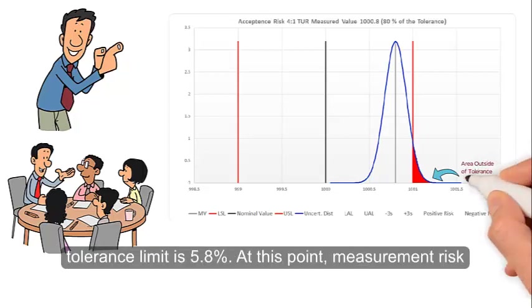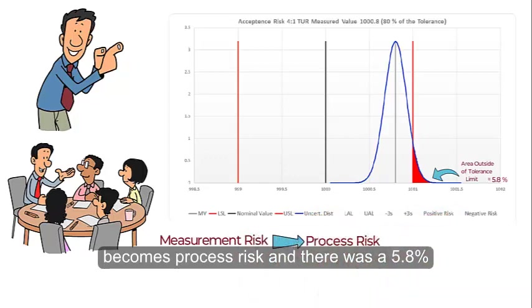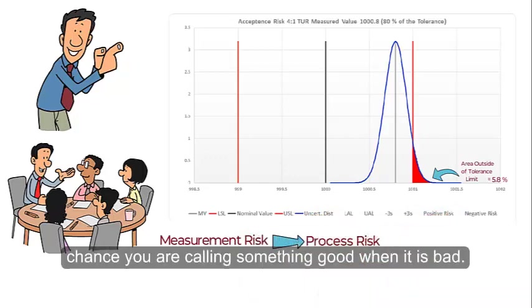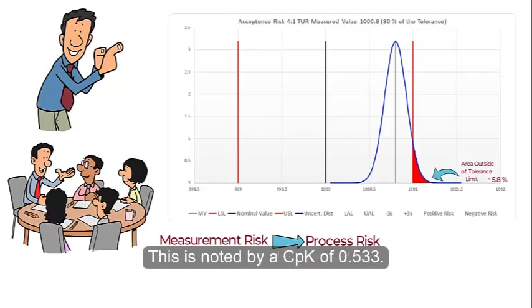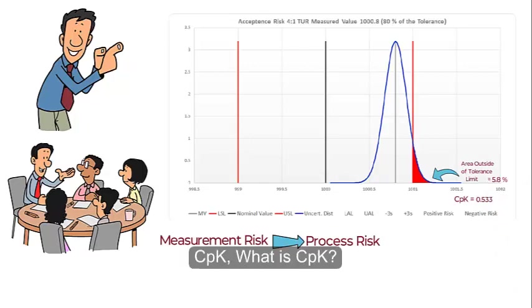The area of the distribution beyond the tolerance limit is 5.8 percent. At this point, measurement risk becomes process risk, and there is a 5.8 percent chance that you are calling something good when it's bad. This is noted by a CPK of 0.533.